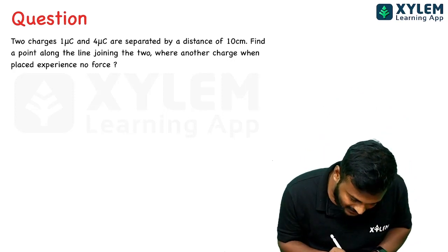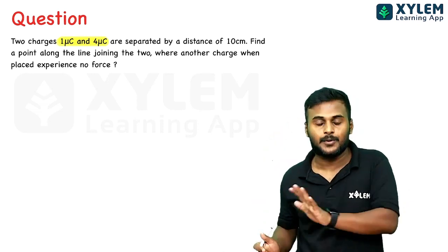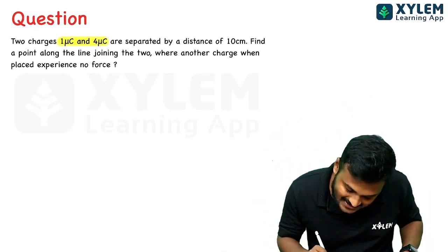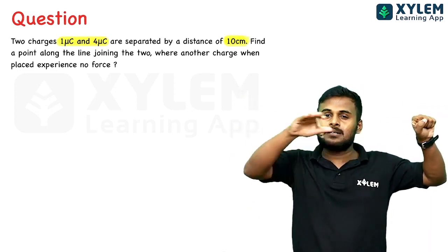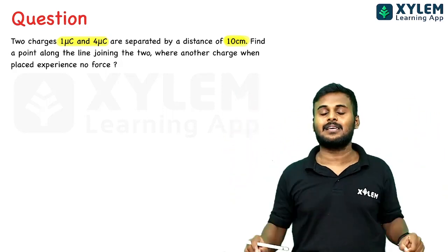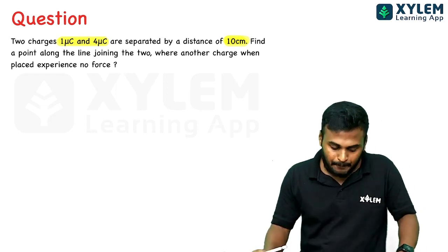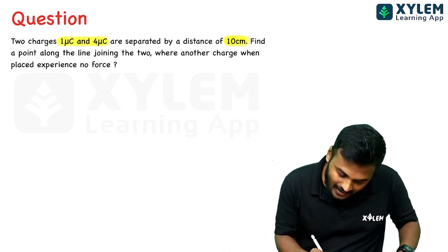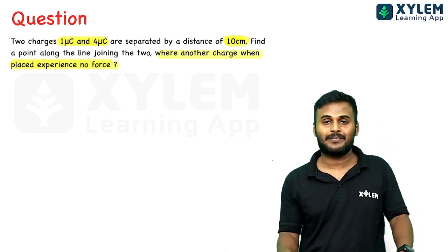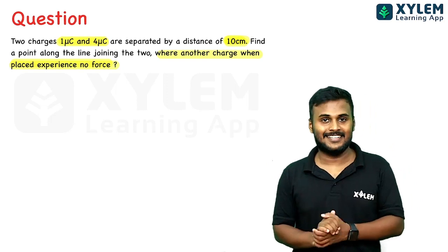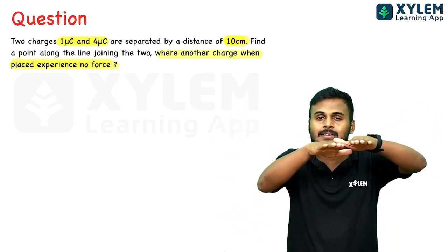Next question. Two charges — one micro-coulomb and four micro-coulombs — are separated by a distance of 10 cm. Find the point along the line joining the two charges where another charge, when placed, experiences no force.